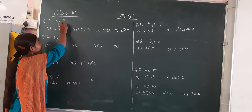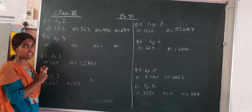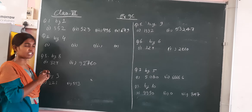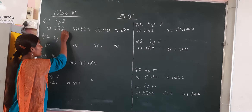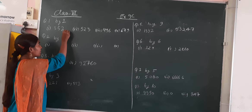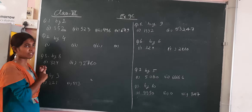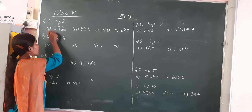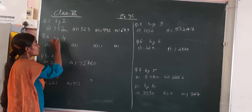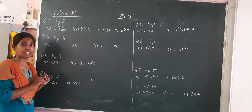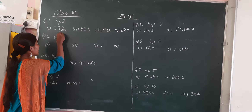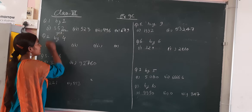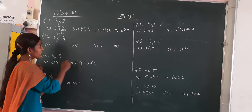Divisibility by 2. How we are checking divisibility by 2? If the unit place number is even, then it is divisible. So in the first option, the unit place number is 2. 2 is an even number. So this is yes — this is divisible by 2.